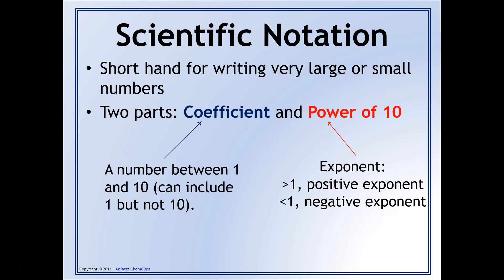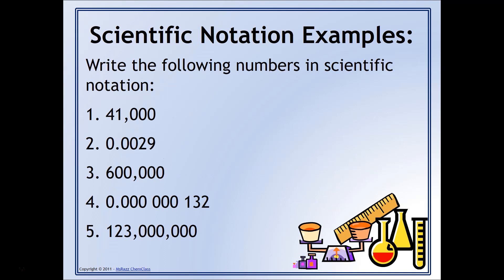Another way to think about it is if you have a large number, that means you have to be multiplying by something positive. If you have a small number, you have to be multiplying by something negative. So here are some examples. I'm going to ask you to write the following numbers in scientific notation. You're more than welcome to watch me do a couple of examples and then try the rest on your own, or you can follow along. Just make sure you're writing this practice down.